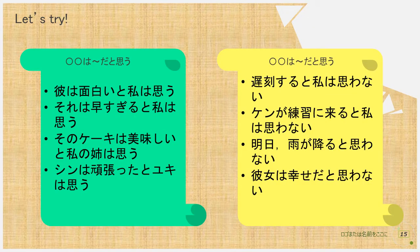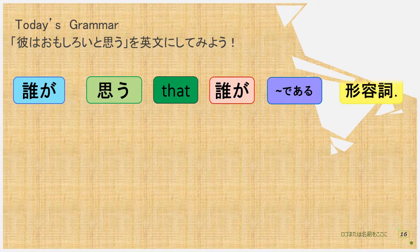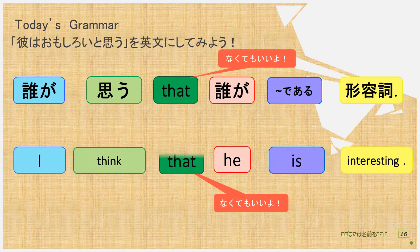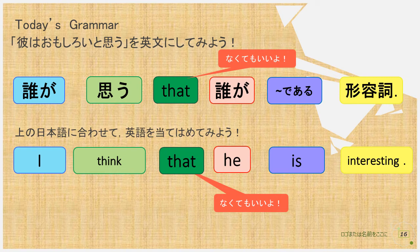Welcome back! Did you write like this? Did you make your ideas? If not, you can use my ideas. Now let's make sentences. The word order is: who thinks + that + who + is + adjective. For example, 'I think that he is interesting.' You can also replace the adjective with a general verb.